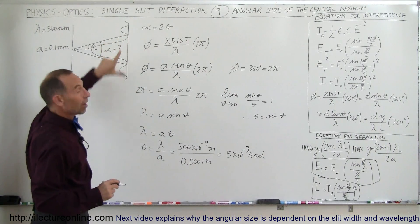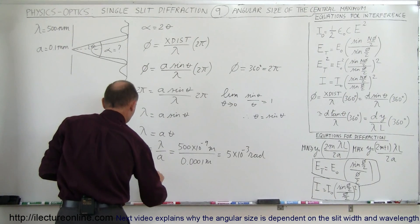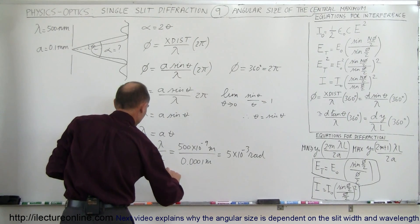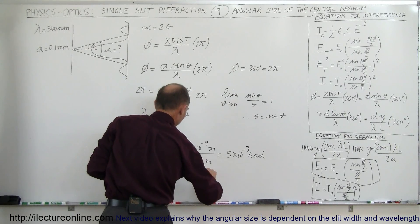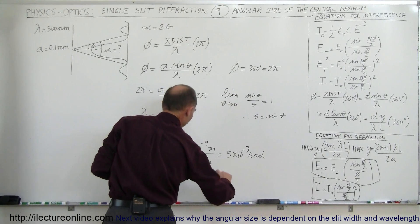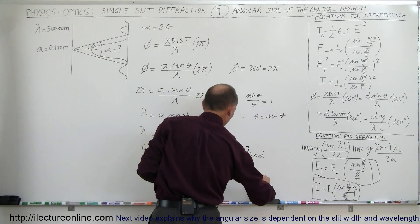Since we know that the width of the center maximum is 2 times theta, we therefore know that alpha is equal to 2 times theta, which is equal to 2 times 5 times 10 to the minus 3 radians, so twice that would be equal to 1 times 10 to the minus 2 radians.